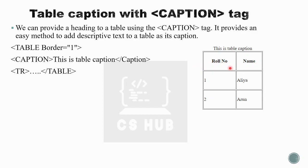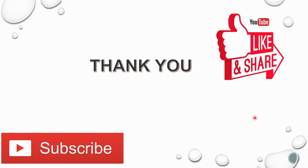To create a table with a caption: start with tr, inside use th for 'Roll Number', close th, then another th for 'Name', close th, close tr. Open a new tr, then td with '1', close td, td with 'Alia', close td, close tr. Open another tr, td with '2', close td, td with 'Arun', close td, close tr, close table. This is how we create a table with a caption.